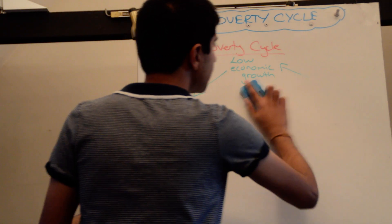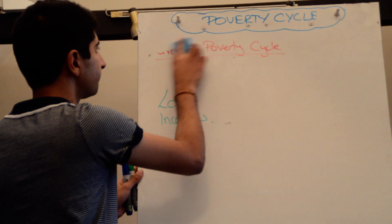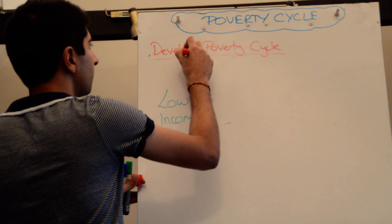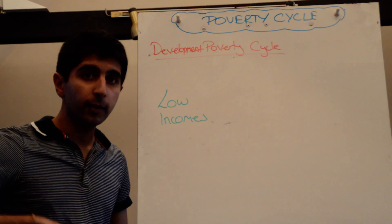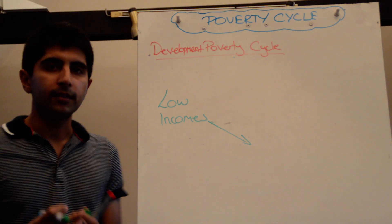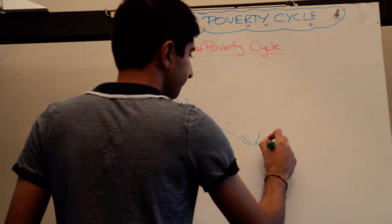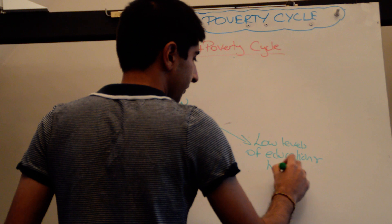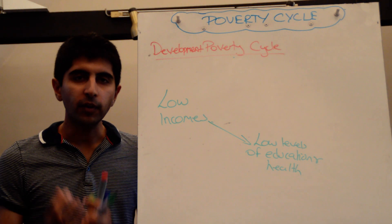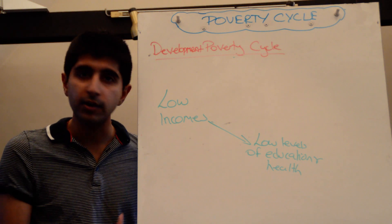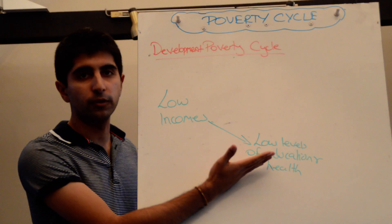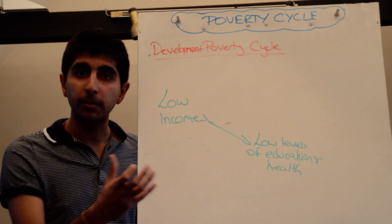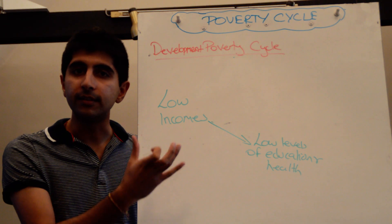There is also the development poverty cycle. Again, it stems from low incomes. With low incomes, citizens in an economy cannot afford education and healthcare, leading to low levels of education and health. In developing countries where it's very hard for the government to fund the provision of education and health in its entirety, the private sector may have a heavy role, meaning people have to pay at the point of consumption. Some people may not be able to afford that, and if you have low incomes, you certainly will not be able to afford decent standards of health and education.